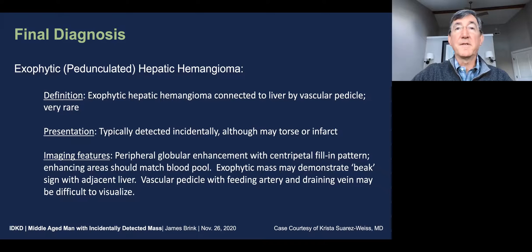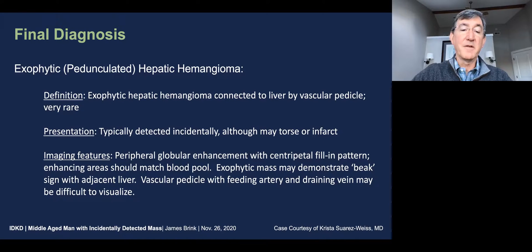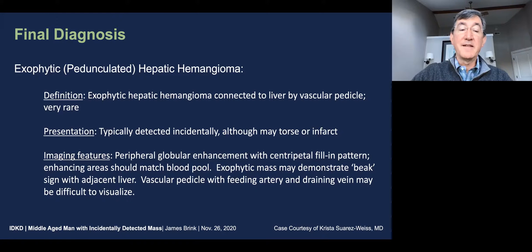Imaging features include typical findings of a hemangioma, including peripheral globular enhancement with centripetal fill-in, and the enhancing areas should match the blood pool.